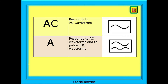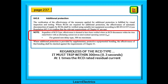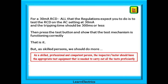Looking at type AC and type A RCDs, they will be marked with the symbols shown here. The AC type only responds to AC waveforms, whereas the type A responds to AC waveforms and to pulsed DC. Take a look at page 237 of the wiring regulations book — section 643.8 states that regardless of the type it must trip within 300 milliseconds with a test current of one times the RCD rated residual current. For a 30mA RCD, all that the regulations require is to test the RCD on the AC setting at 30 milliamps with a tripping time of 300 milliseconds or less, then press the test button to show the test mechanism is functioning correctly.